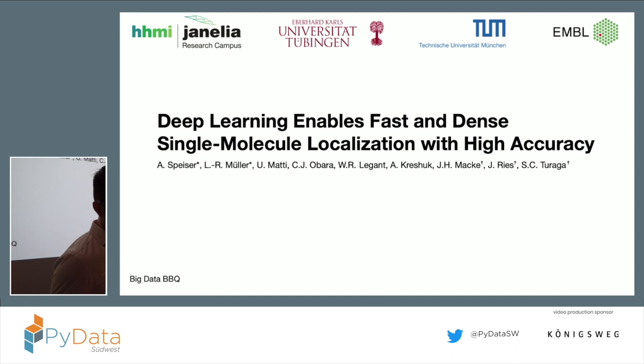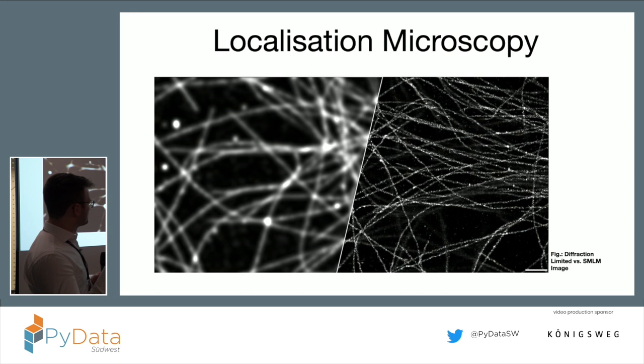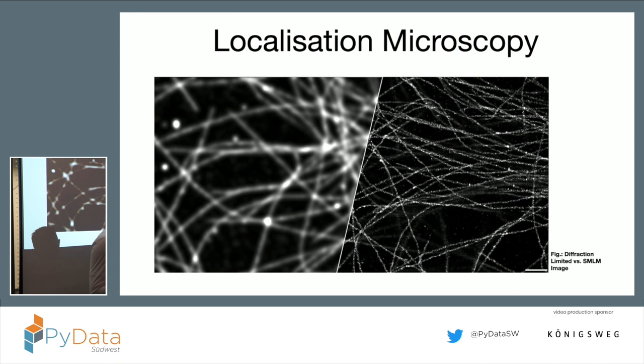You might ask yourself: what is localization microscopy? It basically means going from left to right. Because in physics there are fundamental limits as to how good you can focus light, and it has been a long-held belief that you cannot surpass this barrier — that's basically it for what you can get out of a light microscope. But then people had good ideas how to do this and were able to actually surpass this barrier by using a trick.